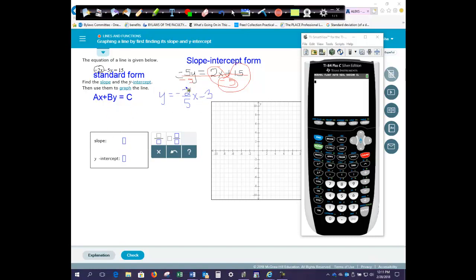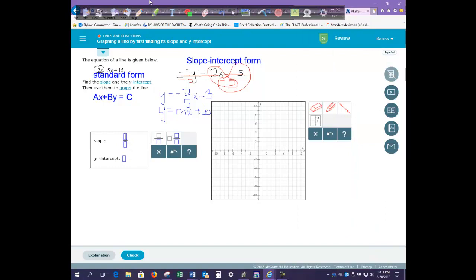So your slope represents the m in slope-intercept form. m is the coefficient of x, the number in front of x. So here, our slope is a negative 2 fifths.